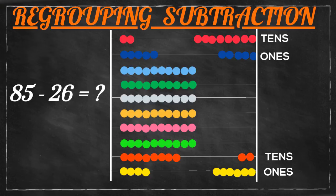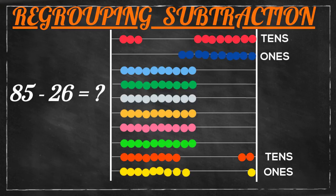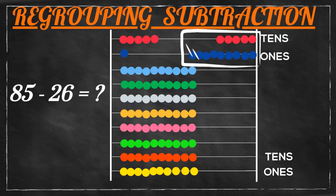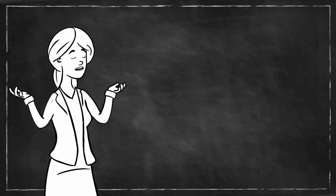Now to subtract in the ones place, we have to take away six from five. To do that, we first move five ones from top and bottom, then trade one bead from the tens place and move 10 beads to the ones place. We then move the remaining one bead, leaving nine ones. At the tens place we move two beads, so five beads are left. Five tens and nine ones make fifty-nine.